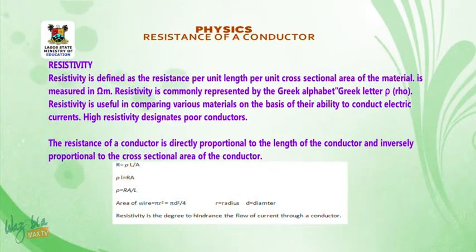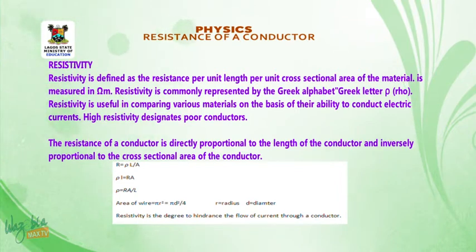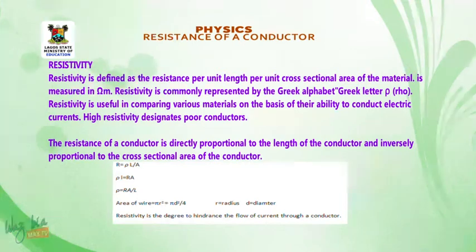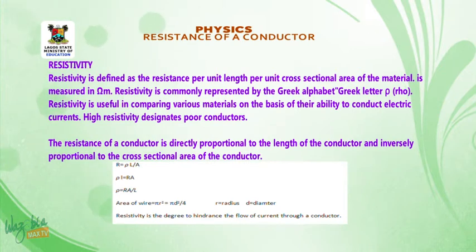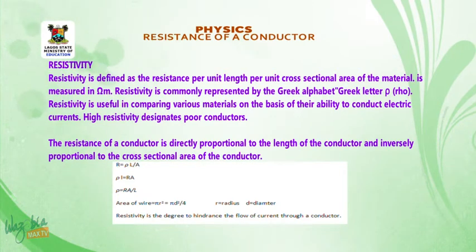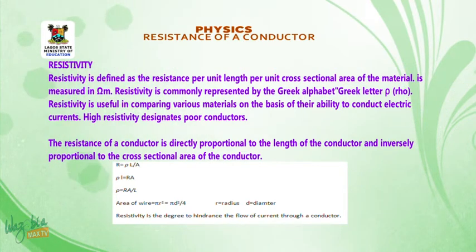Resistivity is defined as the resistance per unit length per unit cross-sectional area of the material. It is measured in ohm-meters. Resistivity is commonly represented by the Greek letter rho. Resistivity is useful in comparing various materials on the basis of their ability to conduct electric current. High resistivity designates poor conductivity.